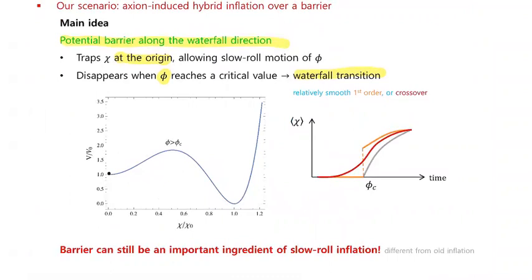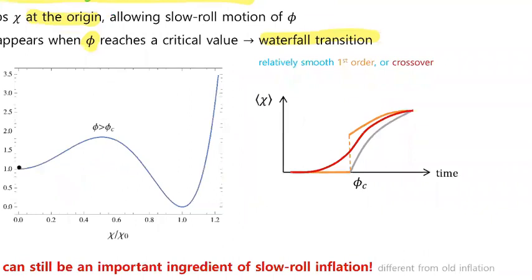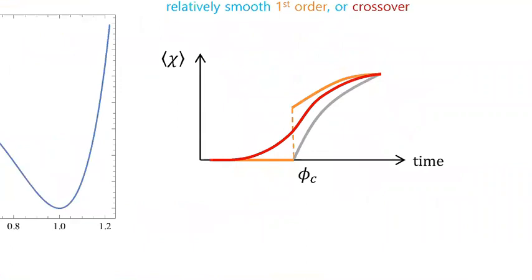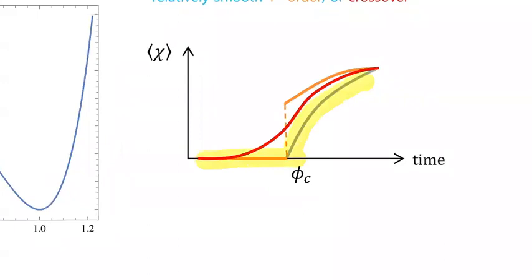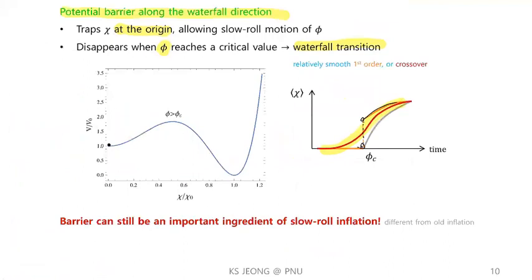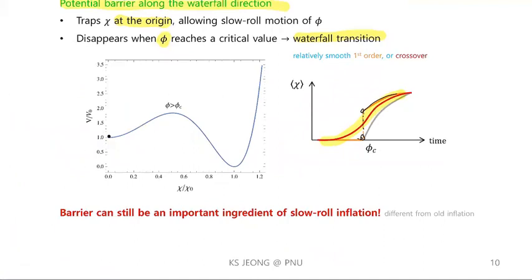Differently from ordinary hybrid inflation, in our scenario the waterfall transition is first-order or crossover. This figure shows the difference between first-, second-, and crossover transitions. The gray line shows a second-order transition: the vacuum value is continuous but the derivative is not. The orange line shows a first-order transition: the vacuum value is not continuous. The red line shows a crossover, where everything is very smooth. Although the waterfall transition can be first-order or crossover, the transition is relatively smooth in the sense that bubbles of true vacuum can be nucleated at the end of inflation.